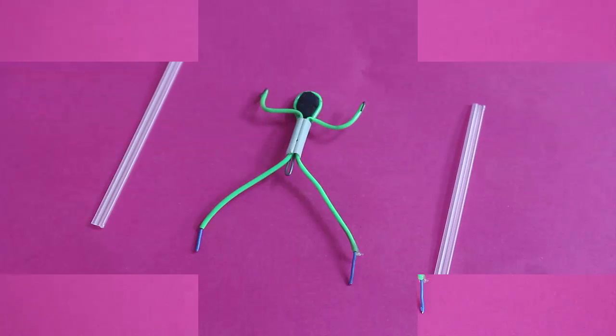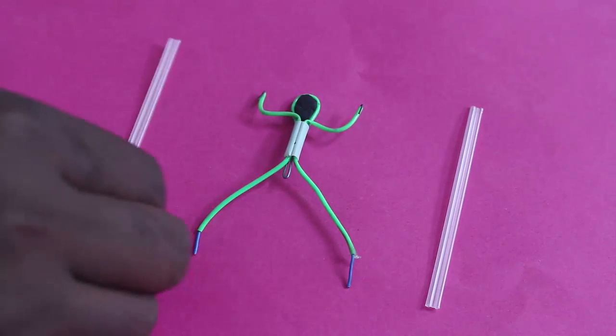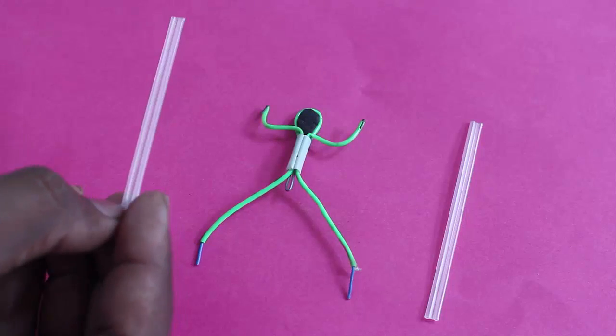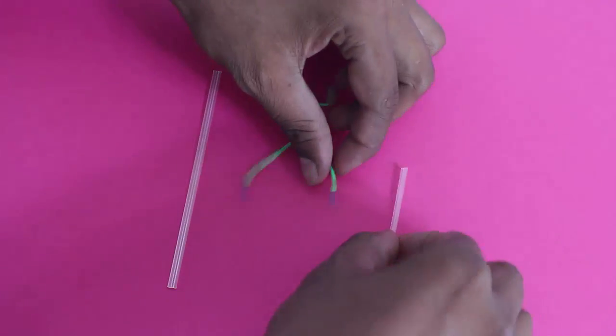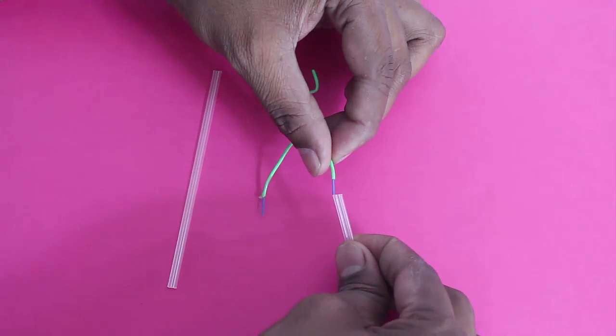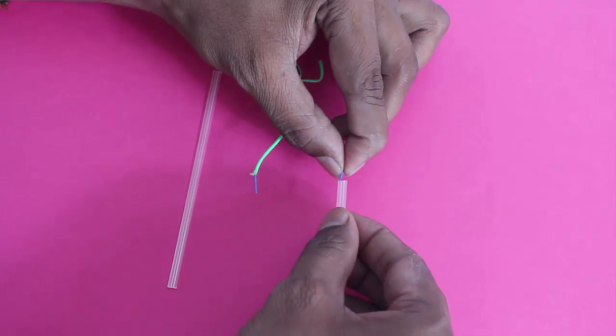First, make the wireman using thin wire, sleeves, and a bead. Notice the pivot near the tail. Then insert one coffee stirrer each in both legs of the wireman.